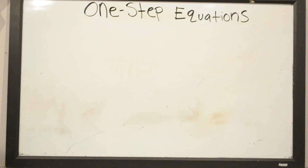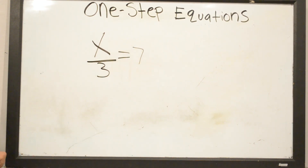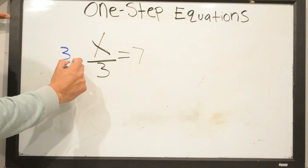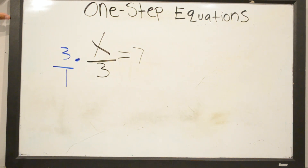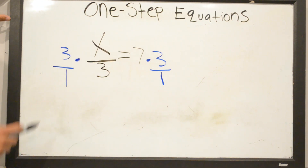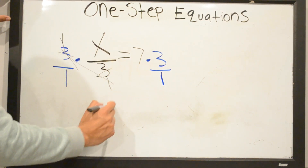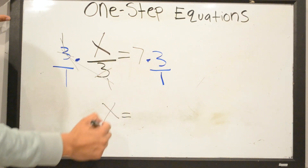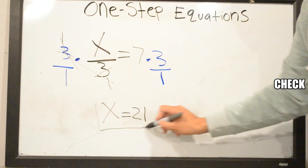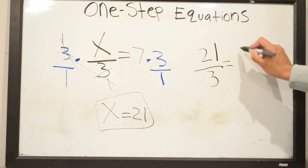Now we're doing one-step equations with division. X divided by 3 equals 7. The opposite of division is multiplication, so to get rid of the 3 we multiply by 3 over 1 on both sides. 3 goes into 3 one time, so they cancel, leaving X by itself. X equals 7 times 3, which is 21. To check: plug in 21 for X — 21 divided by 3 equals 7.